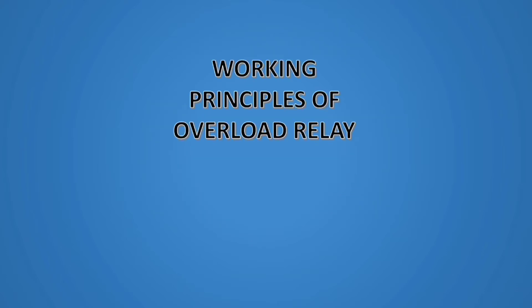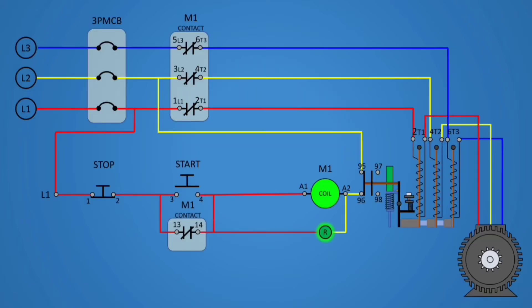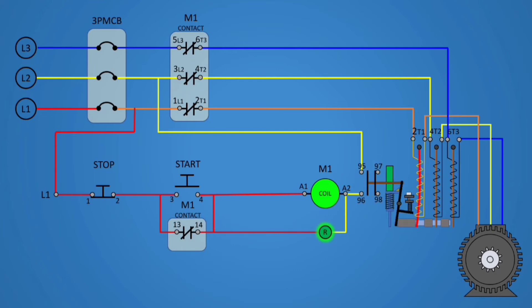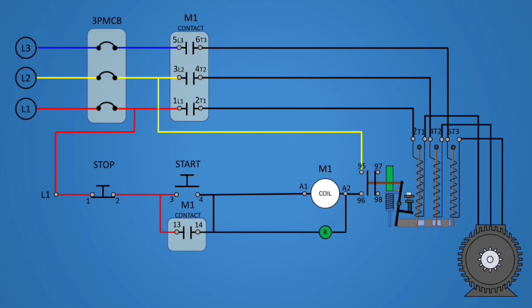Working Principles of Overload Relay. The relay cuts the flow of electricity to the control circuit of the motor, and the motor will stop.